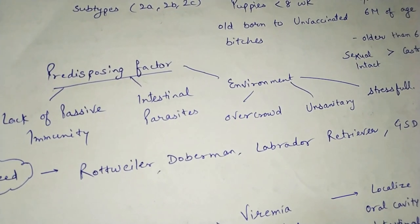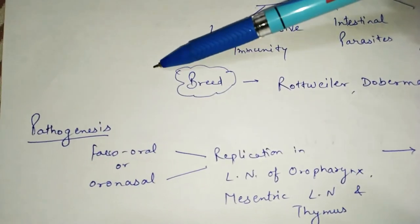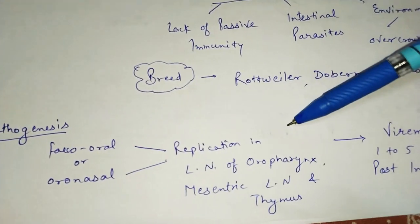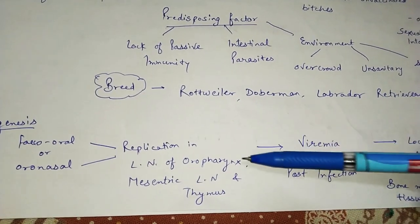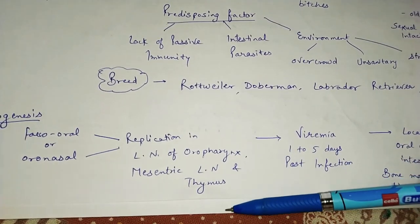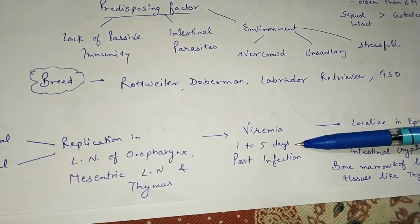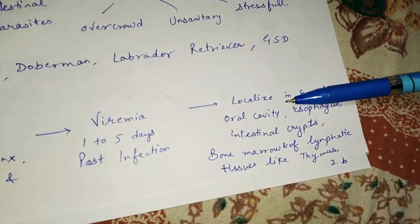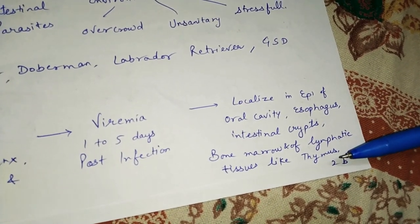Regarding the pathogenesis, the virus may enter through the fecal or oronasal route. Replication occurs in the lymph nodes of the oropharynx, mesenteric lymph nodes, and thymus. Through replication, viremia occurs one to five days post-infection. The virus then localizes in the epithelium of the oral cavity, esophagus, intestinal crypts, bone marrow, and lymphoid tissues such as the thymus.